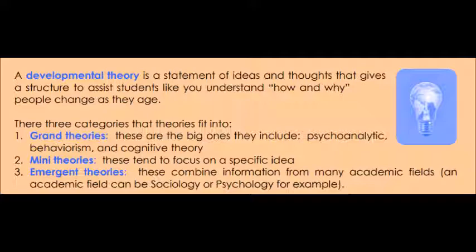Mini theories are narrower in scope and focus on a specific idea. The third type is emergent theories — these theories combine information from various academic fields. For instance, a theory can combine information from sociology and psychology.